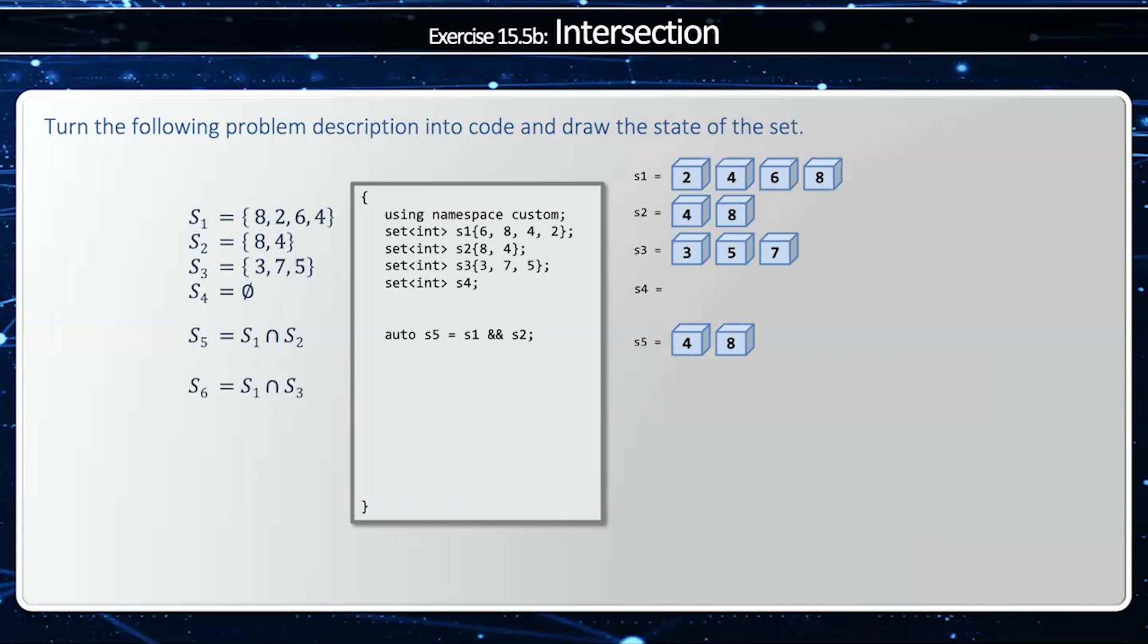S1, S3, remember S3 and S1 are disjoint. They have nothing in common. Therefore, when I intersect them, I'm going to get the empty set. S7 equals S1 intersection S1, intersection of myself, which that is myself. And finally, S1 intersection the empty set, and that's going to be the empty set.